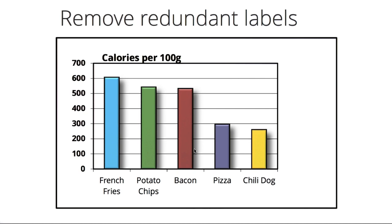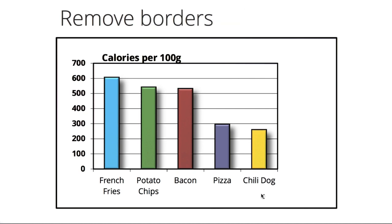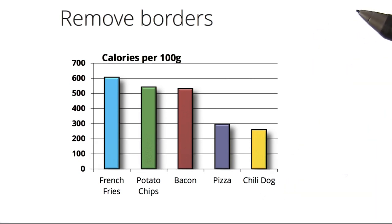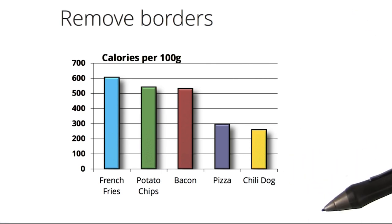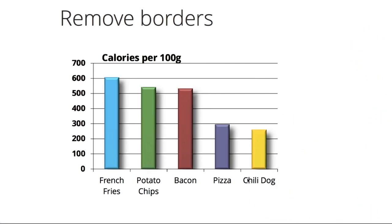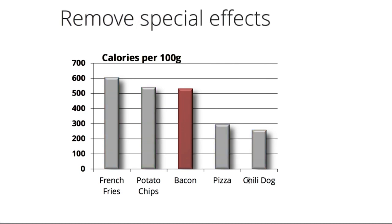Now that we've removed the backgrounds, the heavy borders separating the various elements are no longer necessary, so let's take those out too. Remembering our color theory, we shouldn't use more than one or two colors in a visualization unless it is encoding some value in the data. The color of these bars doesn't reflect any differences between the different foods, so let's remove all of the colors except for the food of interest — in this case, bacon.